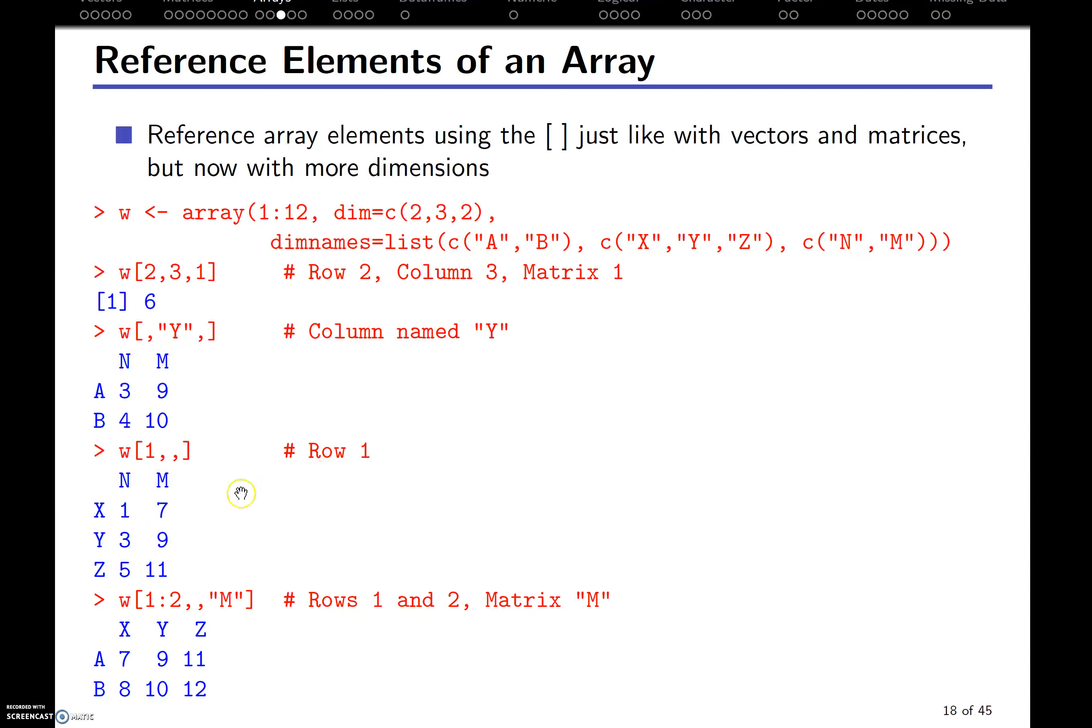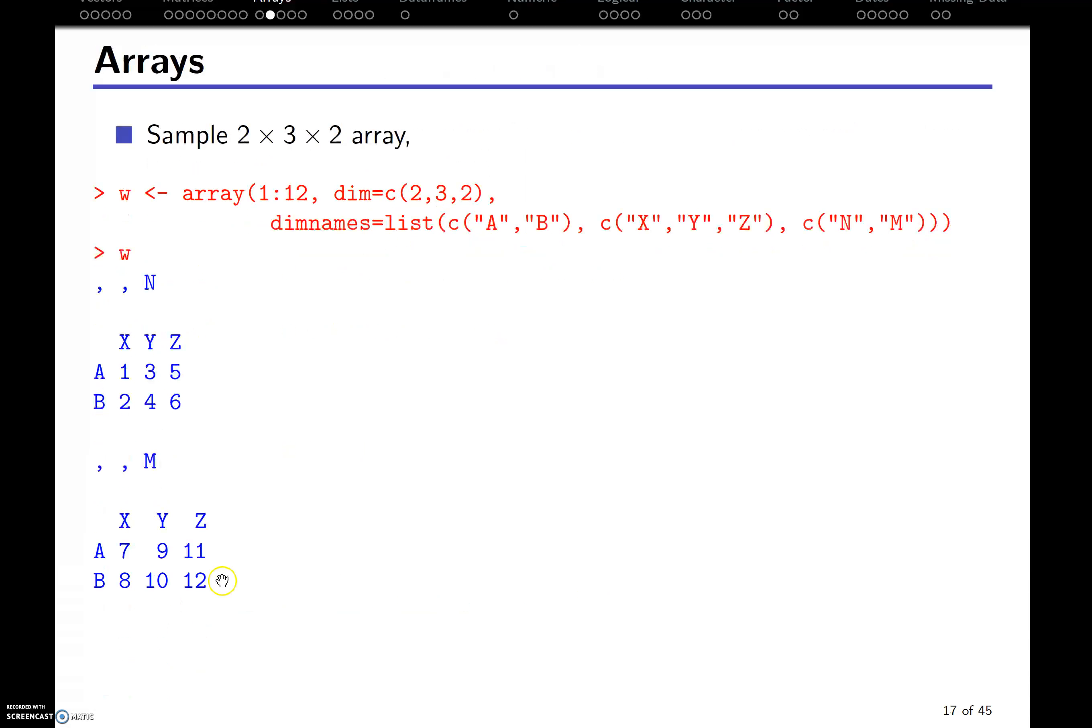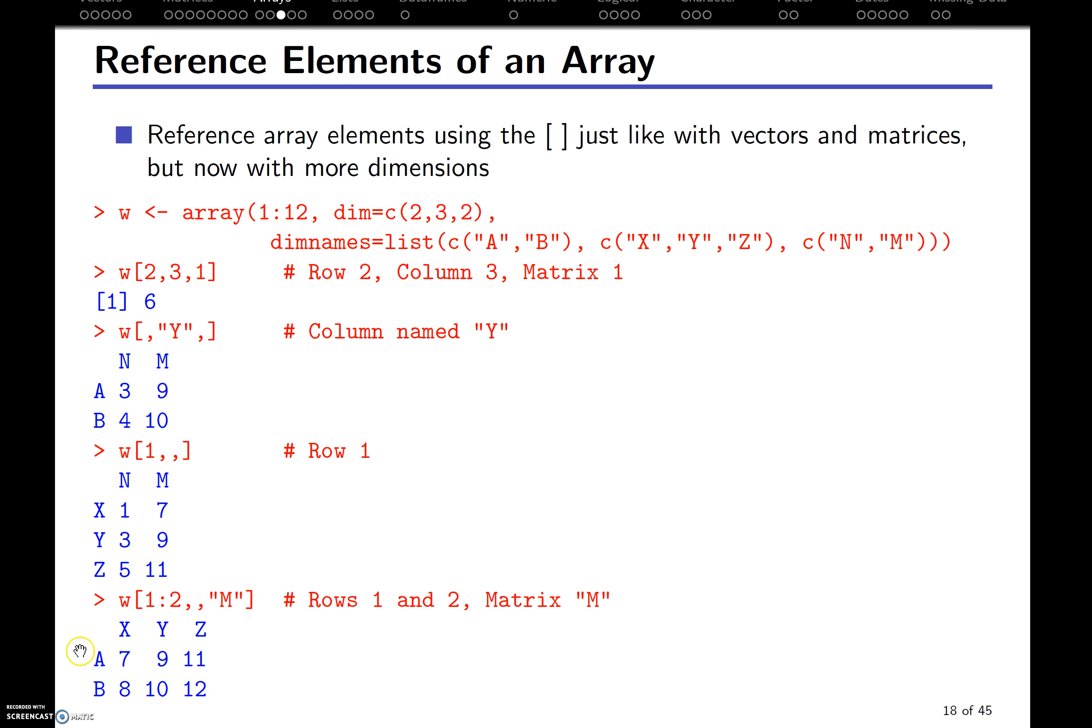Then we can get the first and second rows. So that would be both A and B, but then just dimension M. So that's going to pull out, notice, oh, I went the wrong way, this entire matrix. So can you think of another way that you could have just gotten that? We really don't need that one too, right? Because there's only two dimensions in that first. So we could have left that off and gotten the same result.